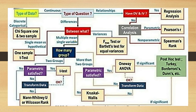For multiple means, we are asked how many groups. For two groups, we use the t-test — either paired or unpaired for parametric conditions. If non-parametric, we use the Mann-Whitney or Wilcoxon rank-sum test. Still under multiple means, if there are more than two groups, we use one-way ANOVA for parametric, and if non-parametric, the Kruskal-Wallis test.